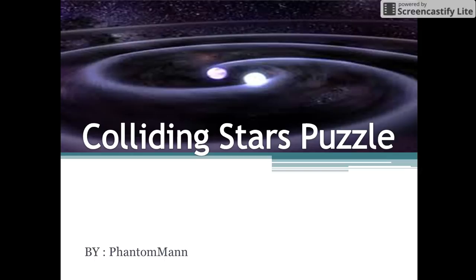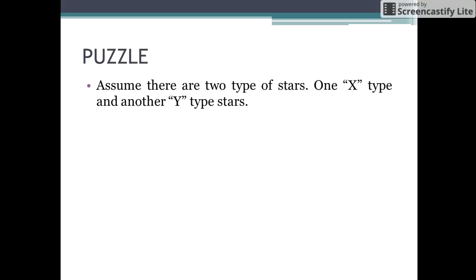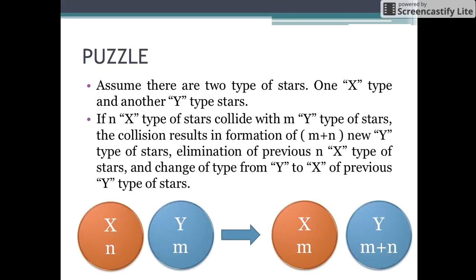Hello friends, let us see the colliding stars puzzle. In this puzzle there are two types of stars: the x type and the y type. There is a theory proposed for the collision of two types of stars. According to the theory, if n x type of stars collide with m y type of stars, the collision results in the formation of m plus n new y type of stars, elimination of the previous n x type of stars, and change of type from y to x of the previous y type of stars.